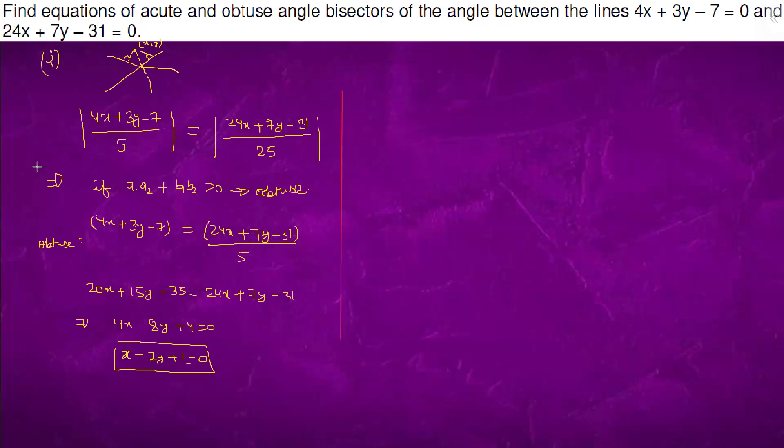Similarly we will go to acute. So acute will open with negative sign which is 4x plus 3y minus 7 equals to minus of 24x plus 7y minus 31 upon 5. It will become 20x plus 15y minus 35 equals to minus 24x minus 7y plus 31.